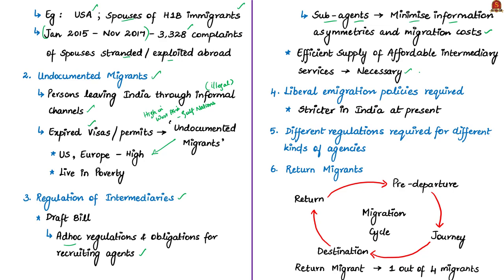The authors suggest that any regulatory framework needs to ensure efficient supply of affordable intermediary services for prospective workers and students who wish to emigrate. The present emigration policies have affected certain groups — for example, nurses can be recruited only through government recruitment agencies, so the cost of their emigration obviously increases. Because of a liberal emigration policy, emigration from Bangladesh to Gulf countries has increased, while emigration from India to Gulf countries has decreased due to stricter policy.